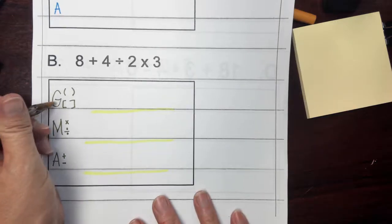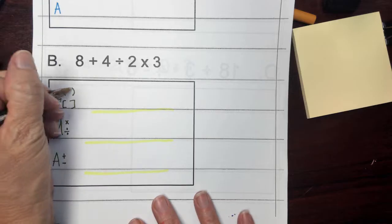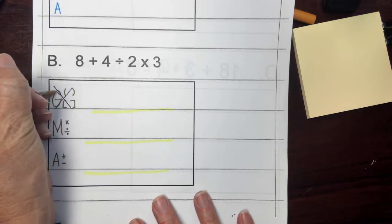All right, so the first thing I'm looking for are any grouping symbols. There are no grouping symbols in this problem, so I'm going to go ahead and X that off.